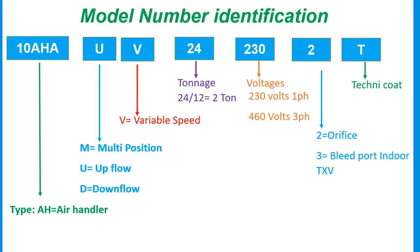Our next topic is model number identification. For example: AH — 'A' is the type, 'H' stands for air handling. 'U' stands for upflow, 'D' stands for downflow. The next letter 'V' stands for variable speed. The number 24 stands for tonnage — from our previous discussion, divide 24 by 12 to get the actual tonnage: 24 divided by 12 equals 2 tons.